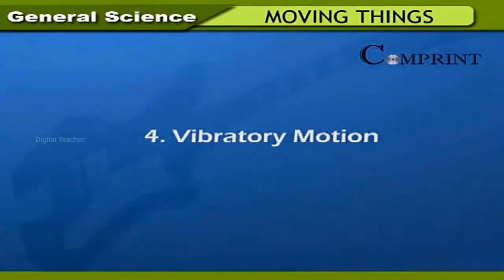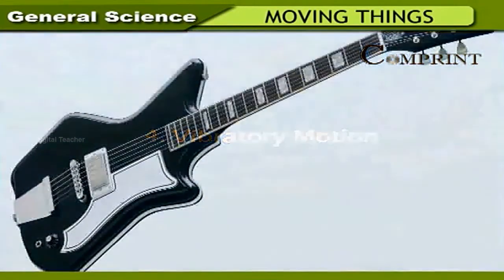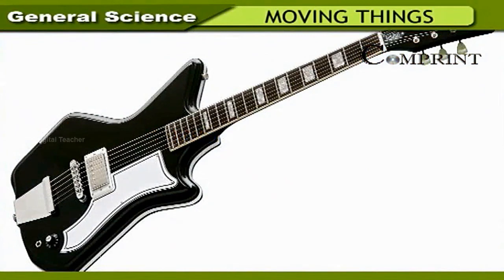Vibratory motion: musical instruments like veena, sitar, and guitar have strings in them. If these strings are made to vibrate, they produce musical sounds.